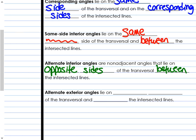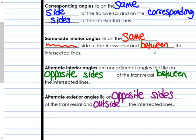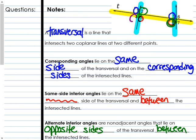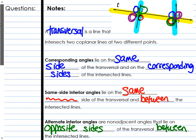Last up, we have alternate exterior angles. They lie on opposite sides of the transversal, but they are outside the intersected lines. An example would be four and six — they're on opposite sides of the transversal. Four is below the transversal, six is above the transversal, and they are both outside the intersected lines. So those are four types of angle pairs, and you're going to have to become really familiar with them because we will see them over and over again.